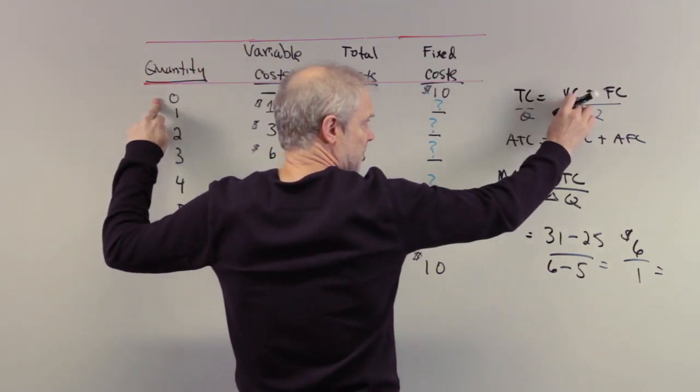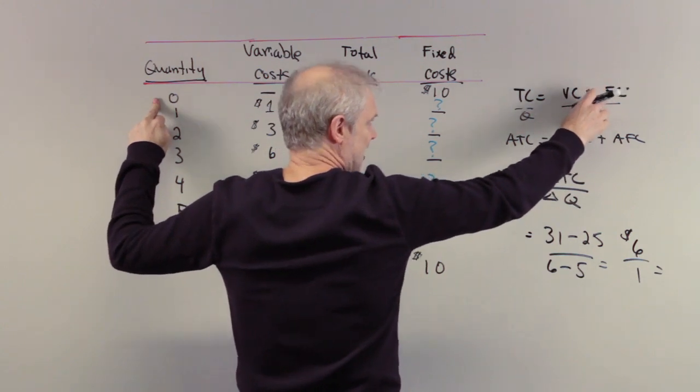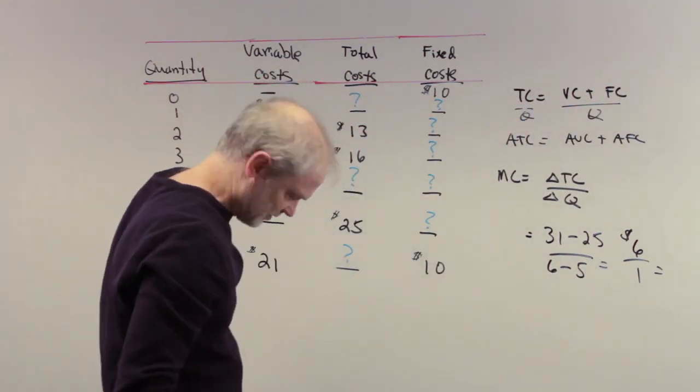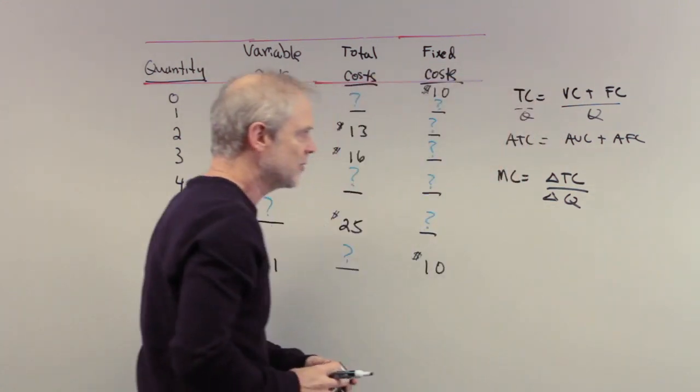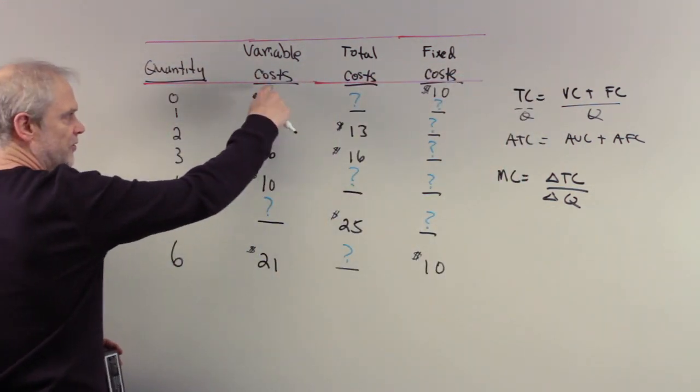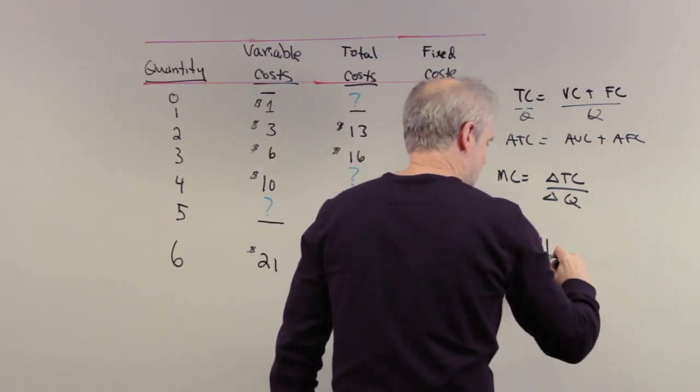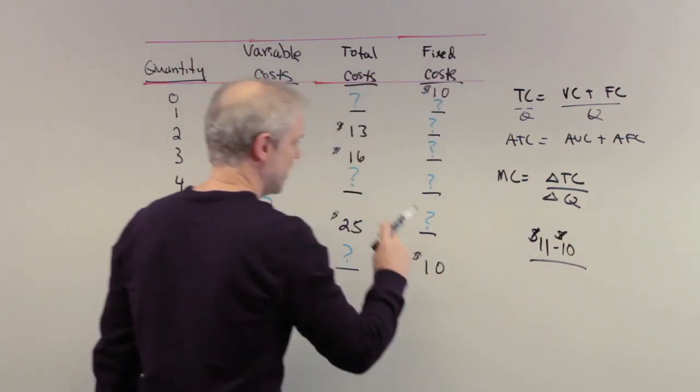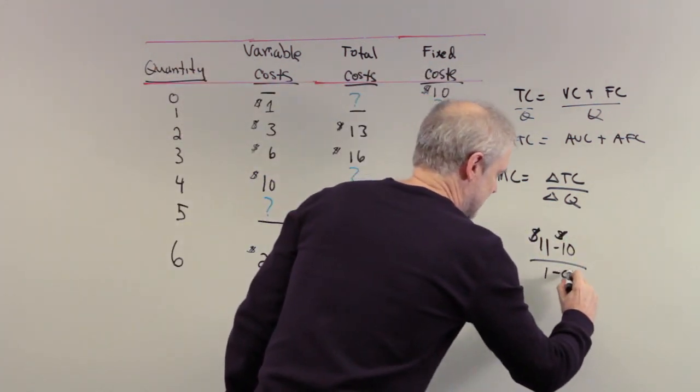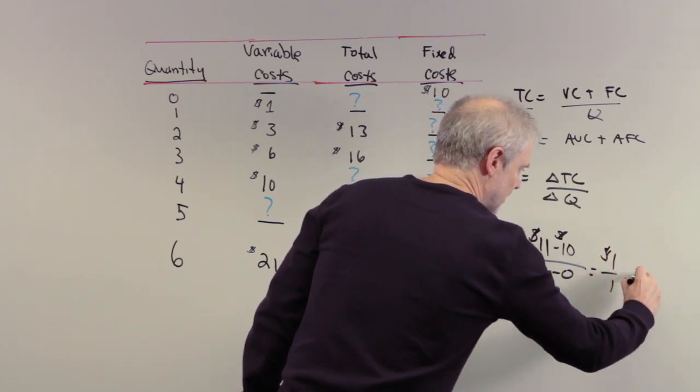Because total cost is equal to fixed plus variable. Variable is zero, fixed is 10. So total costs are $10 when you produce zero posters. When you produce one poster, your total costs go from 10 to 11, which we did before. So now the change in total cost is $11 minus $10 over one minus zero. And that's going to be equal to $1 over one, which is $1.